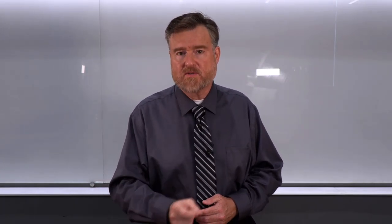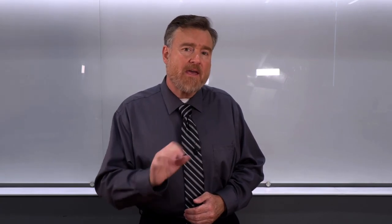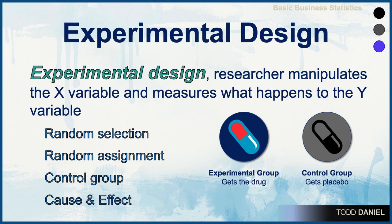Correlational research designs are different than experimental research designs. Let's see if we can delineate the difference between the two. In an experimental design, the researcher manipulates one variable and measures a second variable. The variable that gets manipulated is the independent variable — most commonly an experimental group versus a control group, in which the experimental group gets the drug and the control group gets a placebo, a non-effective substance.